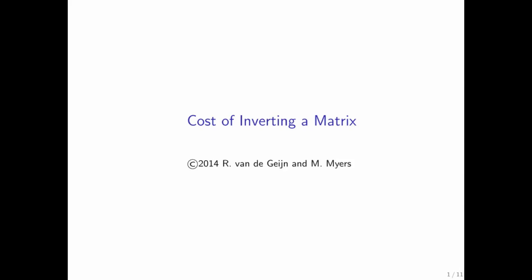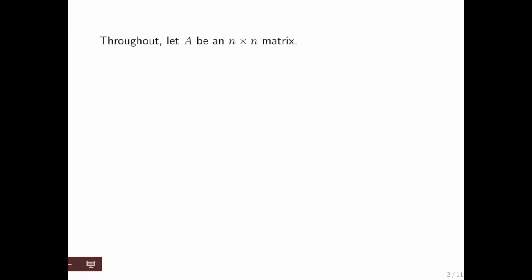Let's talk about the cost of inverting a matrix. Now here we're going to assume that there's nothing special about the matrix. If the matrix has special structure or has a lot of zeros in it, then one might be able to do much better. So throughout, we're going to assume that A is an n by n matrix.